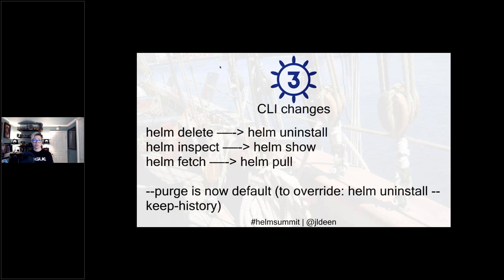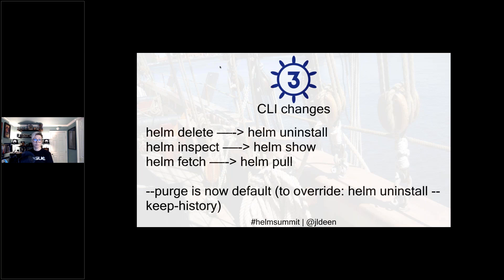There are some CLI changes, but they're not breaking changes. helm delete, helm fetch, and helm inspect have become helm uninstall, helm pull, and helm show respectively — with the intention to be more Kubernetes native. They're technically aliases. In Helm 2, if I wanted to fully delete including history, I had to use the --purge flag. Now that's the default behavior in helm uninstall. If I want to keep history, I can use helm uninstall --keep-history.